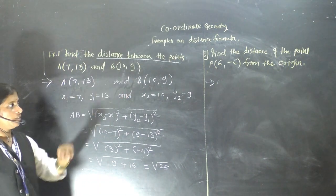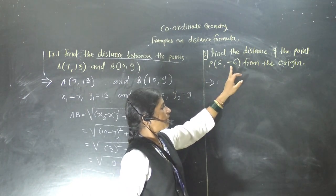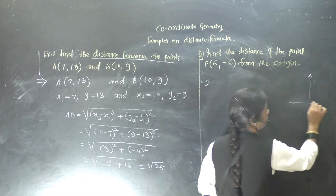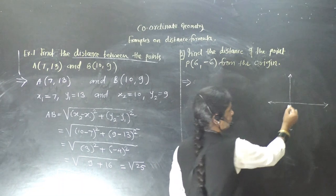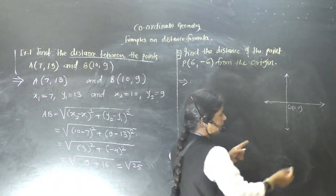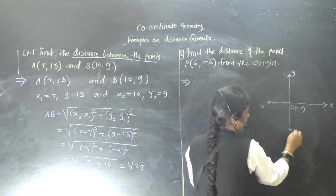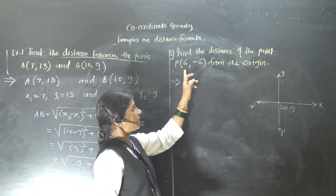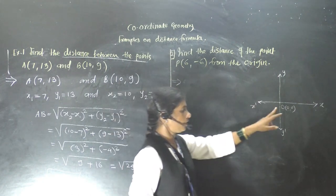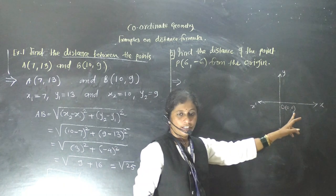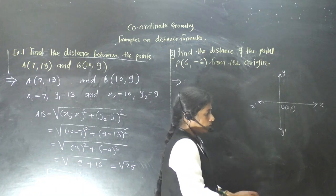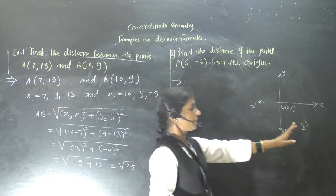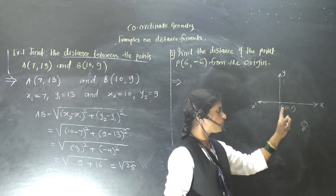Next example: Find the distance of point P(6, -6) from the origin. The coordinates of the origin are (0, 0). The point P has positive x and negative y, so it is in the fourth quadrant. We take origin O as (0,0) with x1=0, y1=0, and P as x2=6, y2=-6.